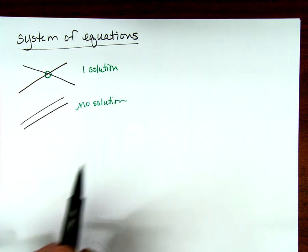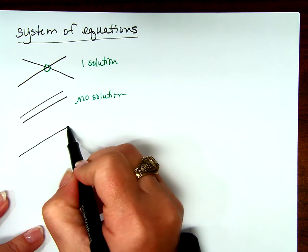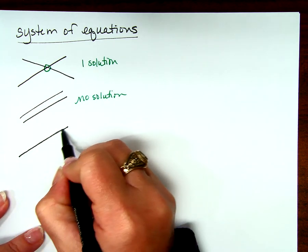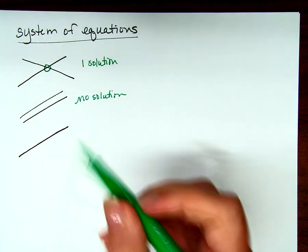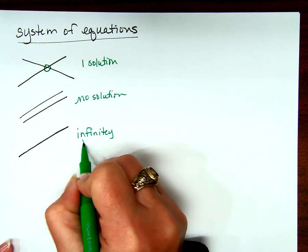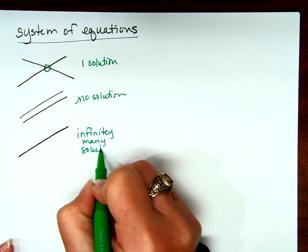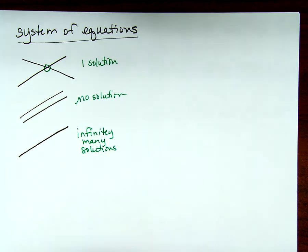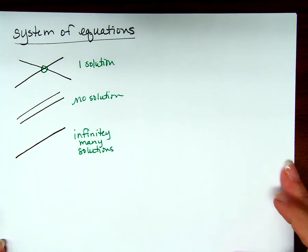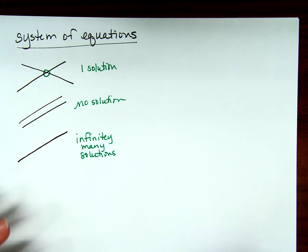And what was the other one? So a line here and a line here — infinitely many solutions. That's what we did before though, right? So we're not doing the same thing as before, because that was systems of linear equations.